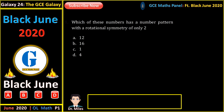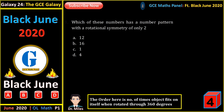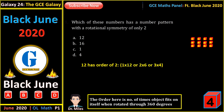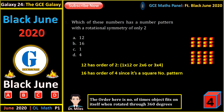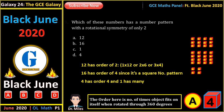Which of these numbers has a number pattern with a rotational symmetry of only 2? The order is the number of times the object fits on itself when rotated through 360 degrees. Using number patterns, 12 can be represented as 1 times 12, 2 by 6, or 3 by 4. In each representation, it has just an order of 2. However, 16 and 4 are both perfect squares — special types of rectangular numbers — and they have orders of more than 2. So the result here is A.